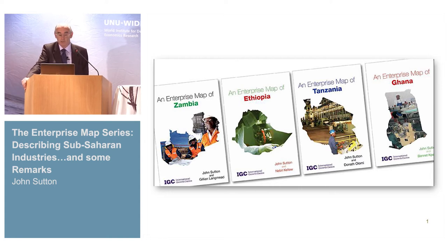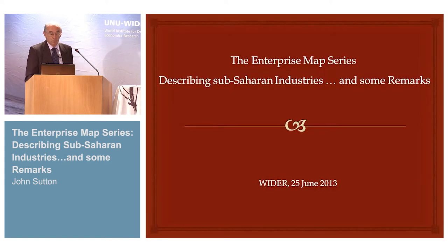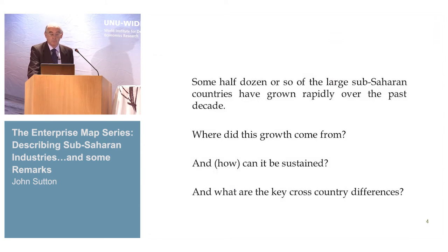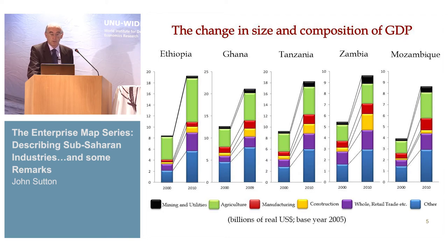It's common ground that some half dozen or so countries in sub-Saharan Africa have been growing very fast for the past decade, which attracts huge attention because it breaks so much from the pattern of the preceding 50 years. Everyone's asking how that can be sustained. I also want to ask about the key cross-country differences. If we look at the change in size and composition of GDP for this group of larger, fast-growing countries, GDP growth has indeed been very impressive over the past 10 or 12 years.